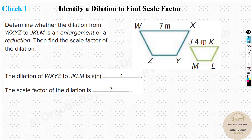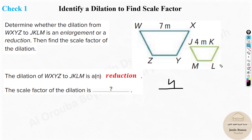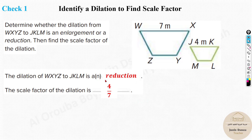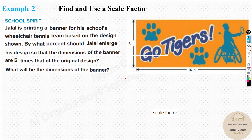Please try the next problem yourself. Looking at it, you can tell it's a reduction — the original was big and this is smaller. The scale factor is the dilated image divided by the original image, which is 4 by 7. So the answers are: reduction, with a scale factor of 4/7.